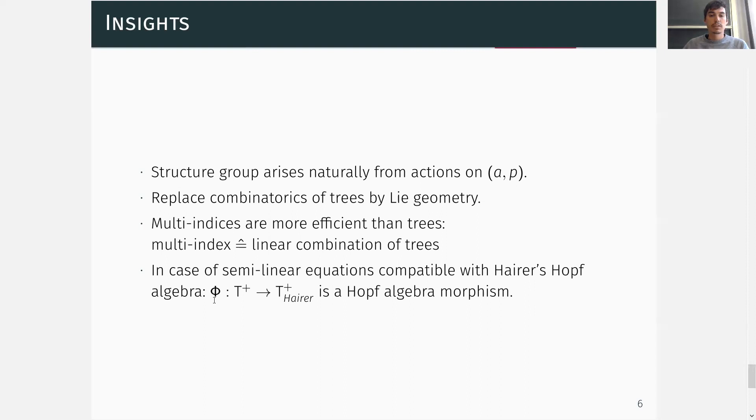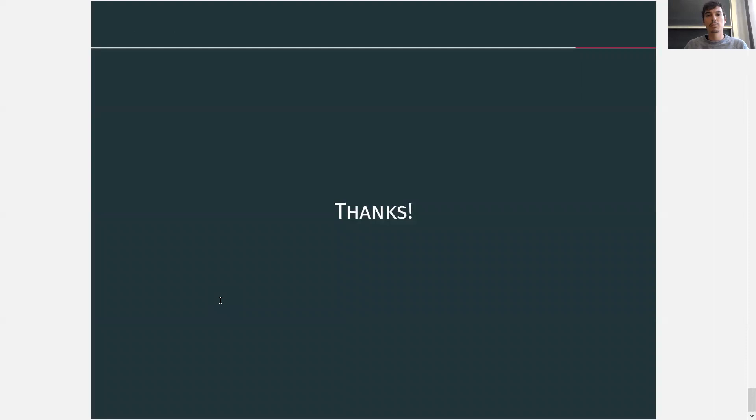And the nice thing here is that although the dictionary φ changes from one equation to another, because the trees look different for different equations, the multi-indices stay the same, and the Hopf-algebra morphism property persists. This shows that our approach is somehow quite universal. With that, I want to thank you for watching my video and I'm looking very much forward to take questions.